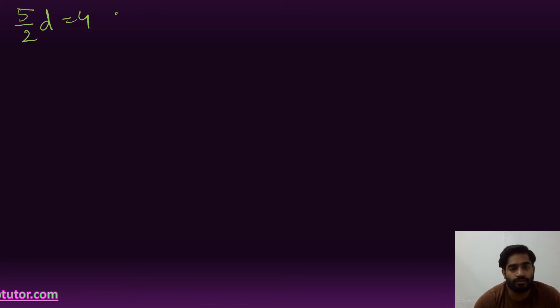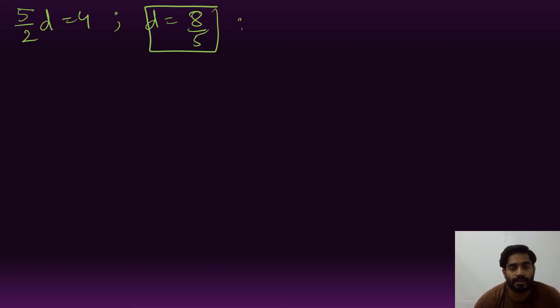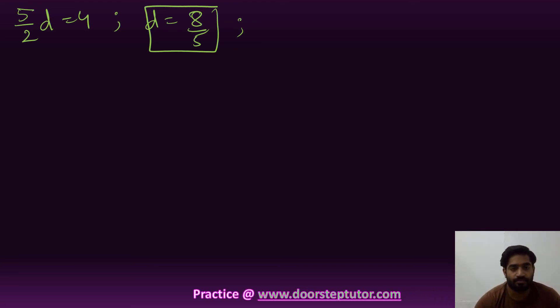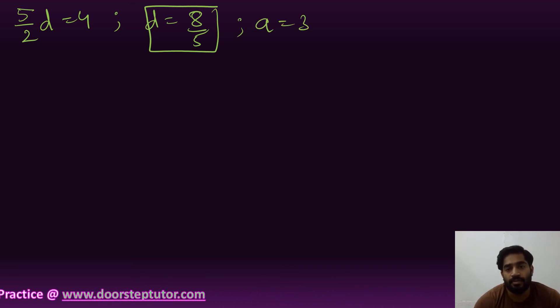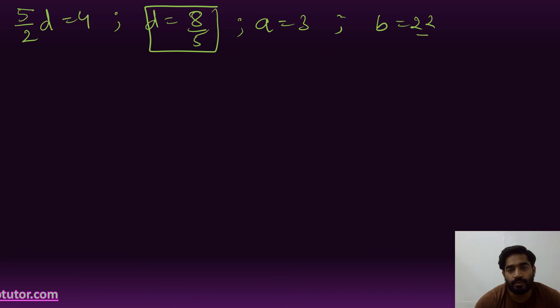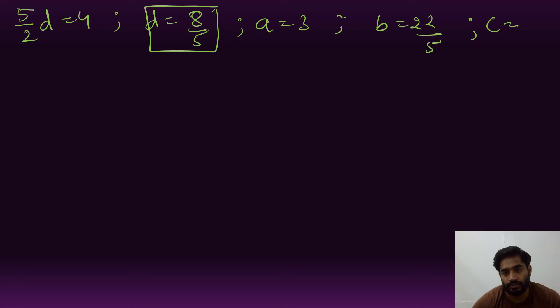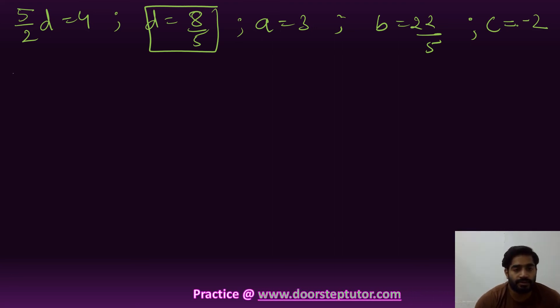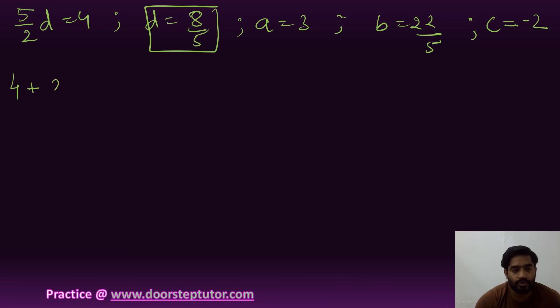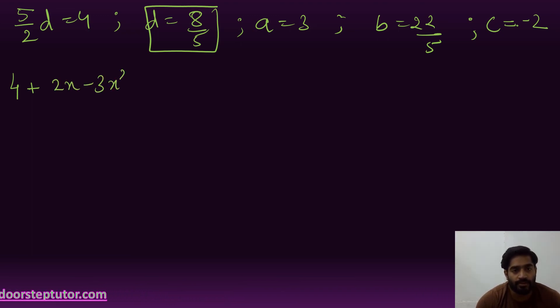From 5d/2 = 4, d = 8/5. Solving for a and b: a = 3, b = 22/5, c = −2. Therefore: 4 + 2x − 3x² + 4x³ = 3·P0(x) + (22/5)·P1(x) − 2·P2(x) + (8/5)·P3(x).